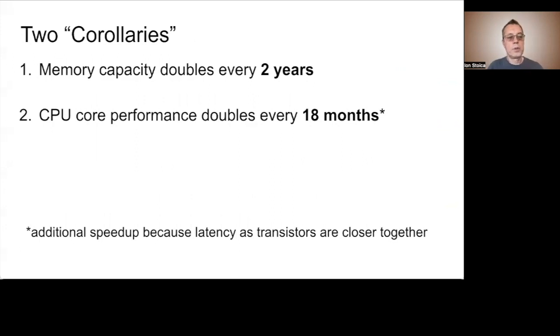There are two important corollaries to these laws. First, the memory capacity doubles every two years without increasing power consumption. Second, the CPU core performance doubles every 18 months.